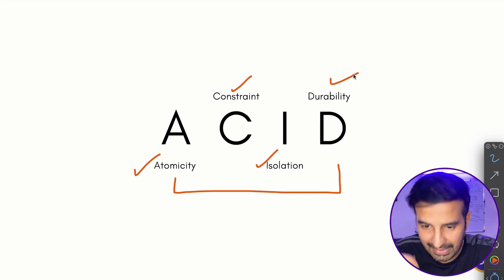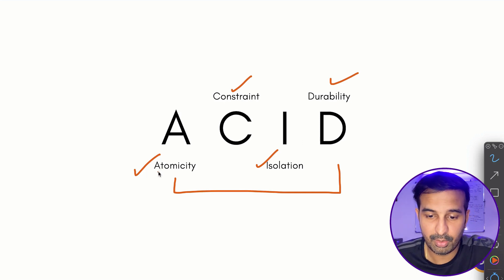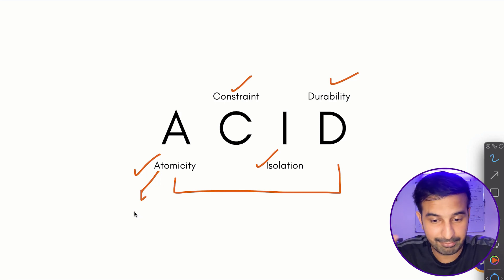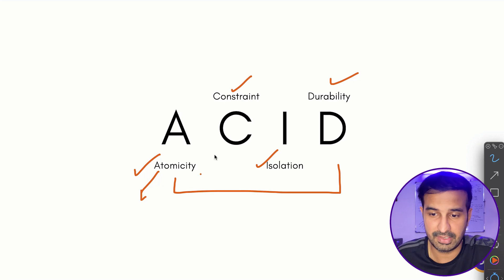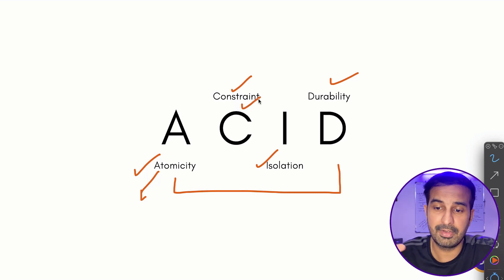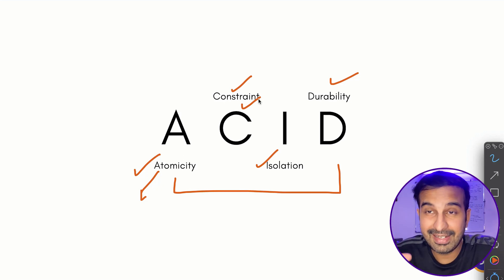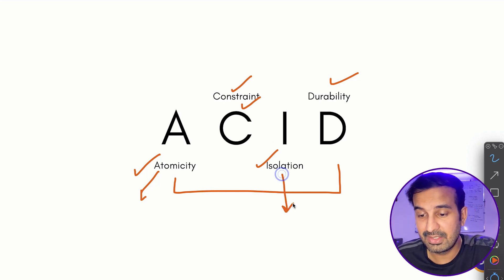Atomicity means that when a database transaction is executed, either everything passes or everything fails — there's no in-between state. Constraint means whenever you execute something in a database transaction, all SQL queries must respect the constraints defined in the table, such as unique constraint, primary key constraint, foreign key constraint, etc.